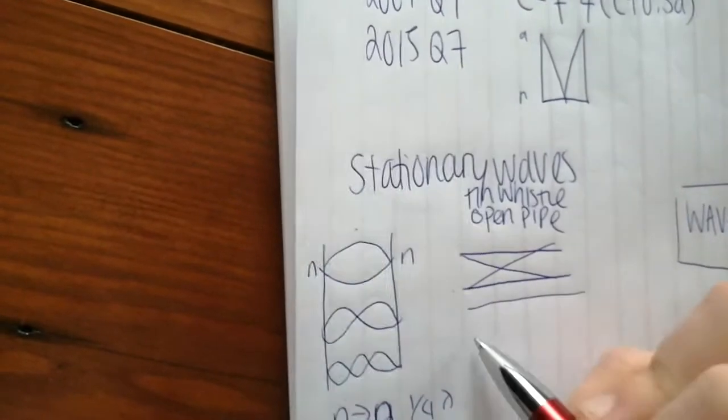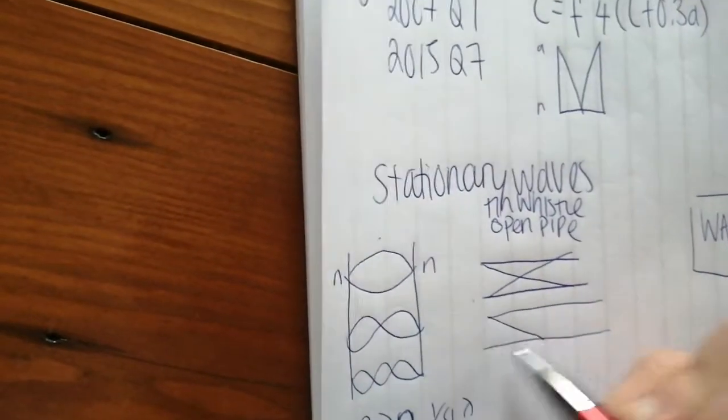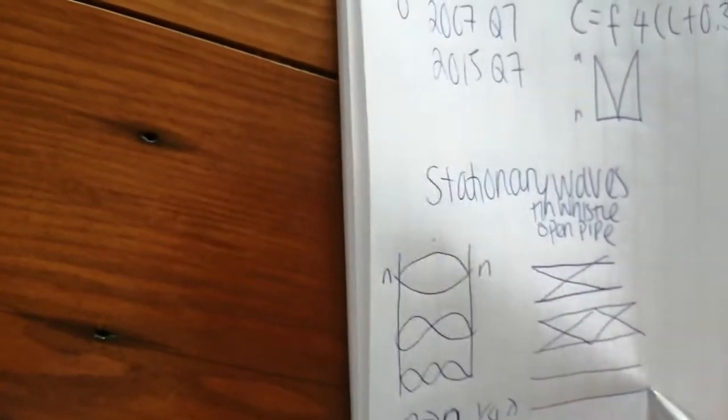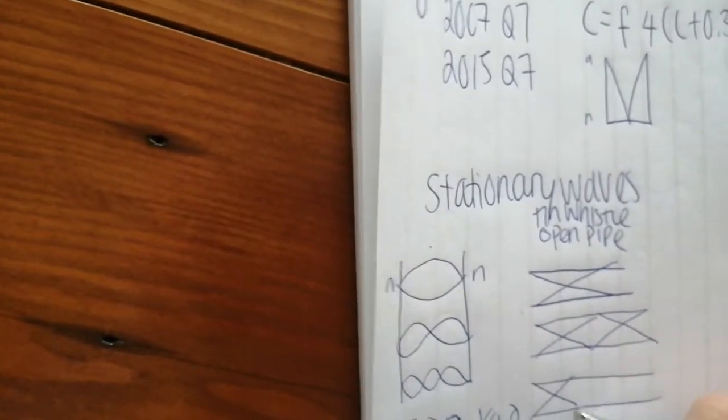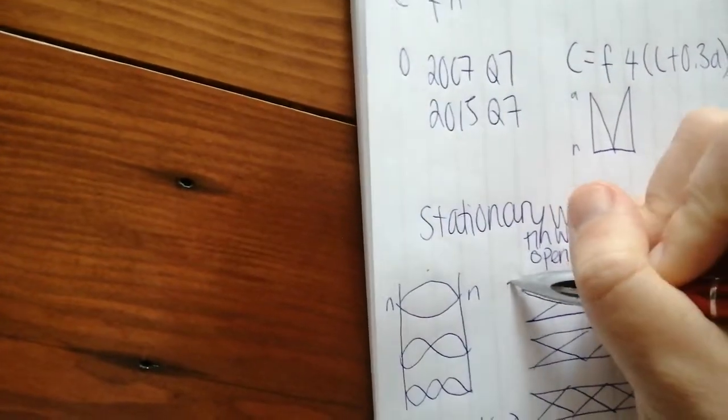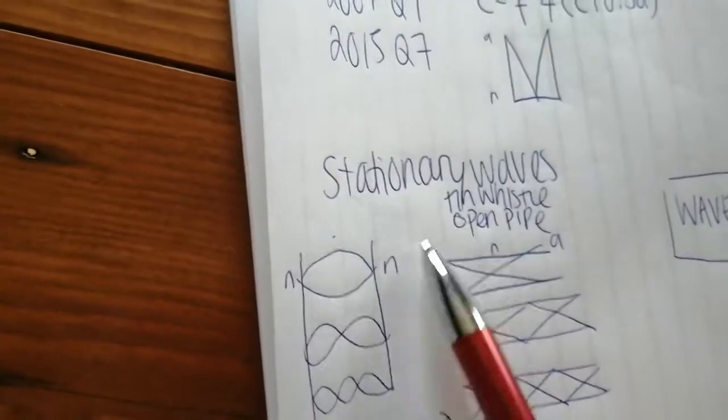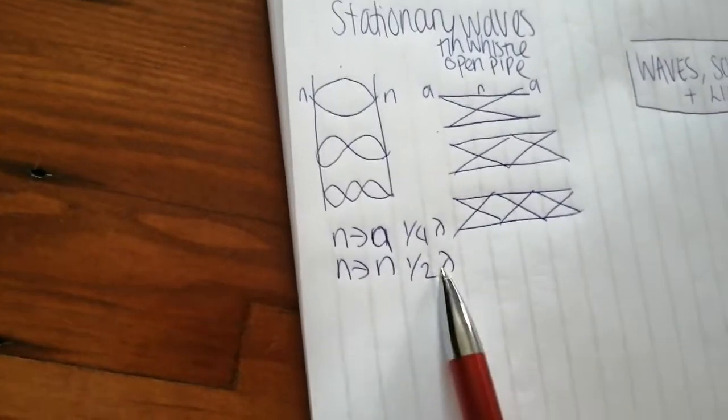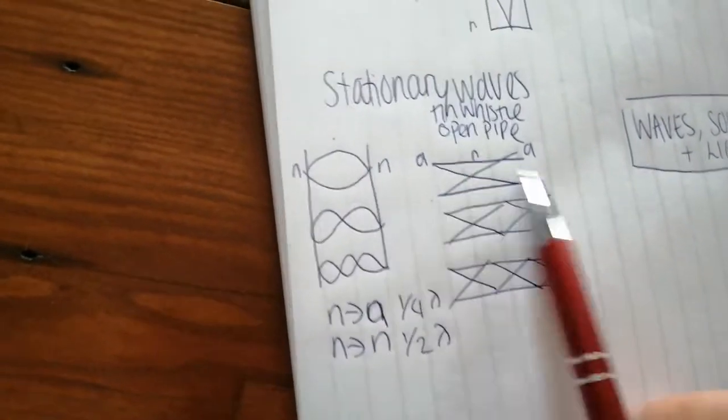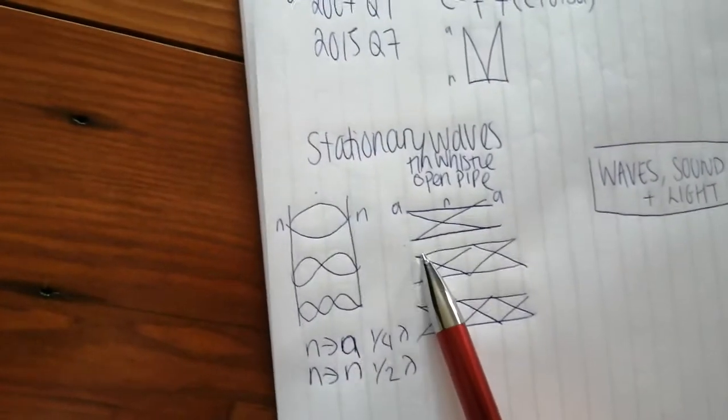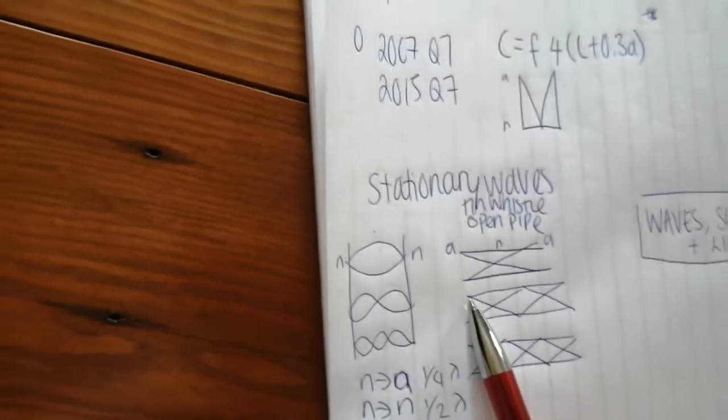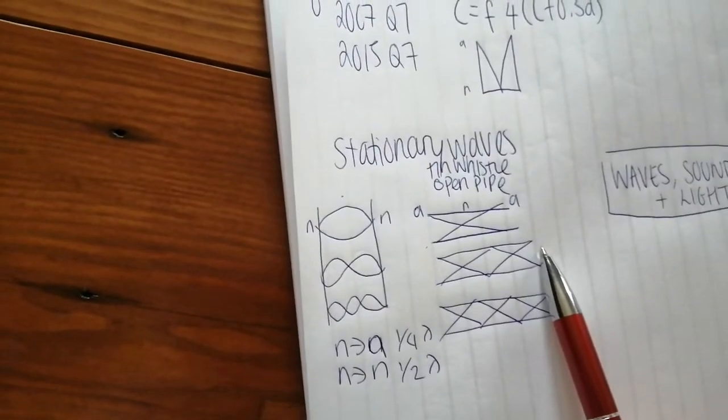So if it's at its fundamental frequency, you basically just draw an X. If it is at its second harmonic, you draw two X's. If it's at its third harmonic, you draw three X's. And this represents an anti-node, node, anti-node.